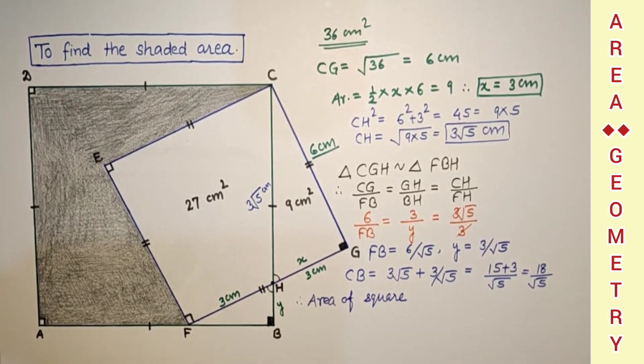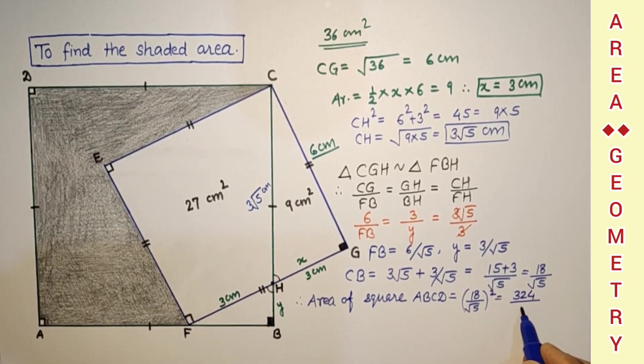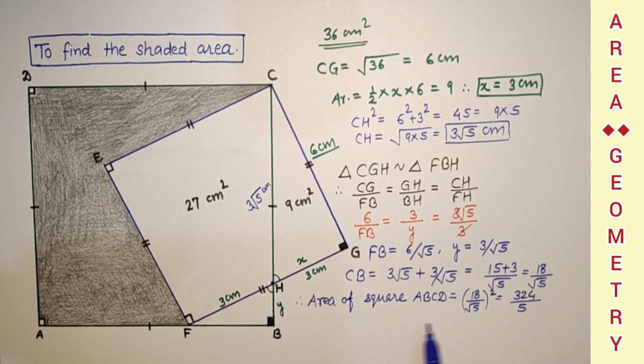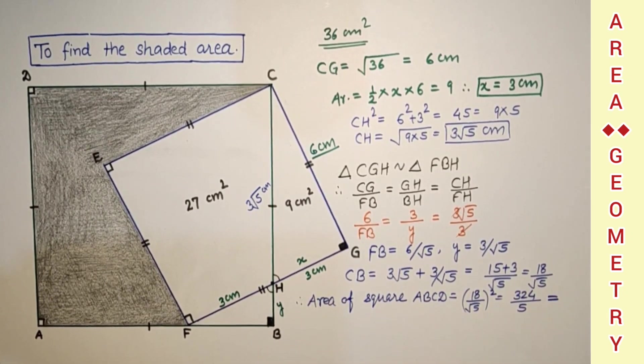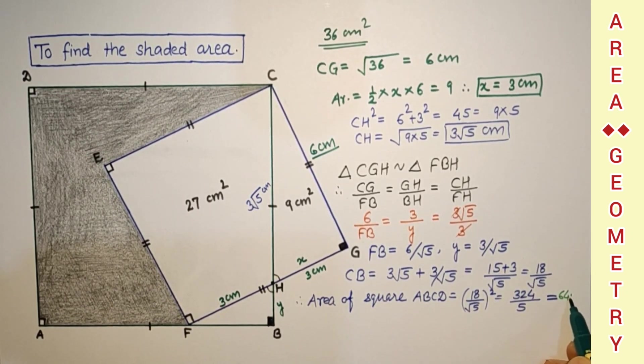Therefore area of square ABCD is equal to 18 by root 5 square, which is 324 by 5. That is equal to 64.8 centimeter square.